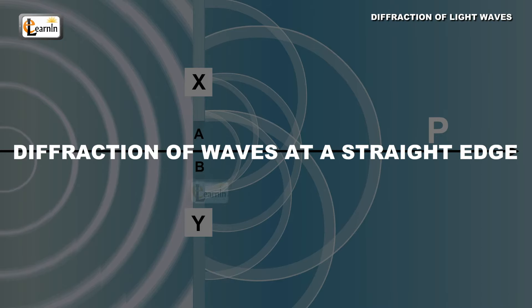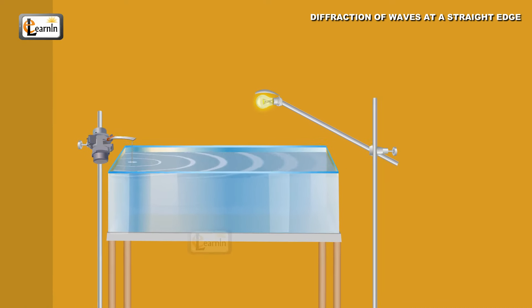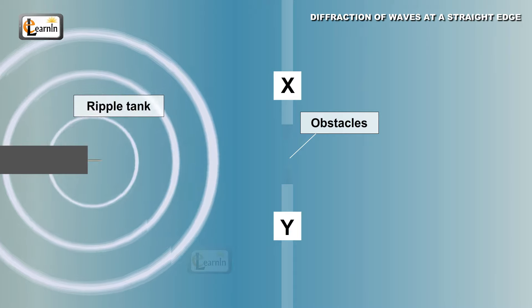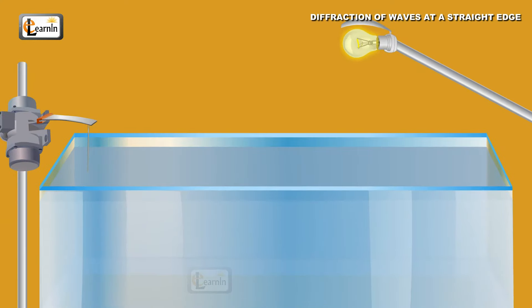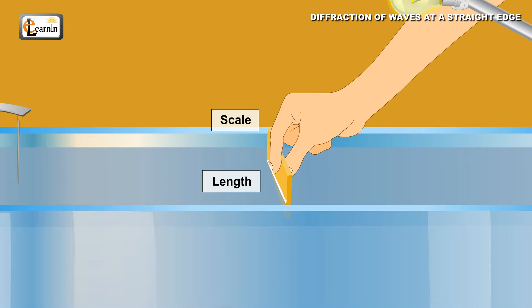Diffraction of waves at a straight edge. Water waves. This concept can be understood with a slight change in the obstacle which is placed in the ripple tank. Let us place half a meter scale in the ripple tank such that its length is in contact with the water's surface but width perpendicular to the surface. This type of obstacle is called a straight edge.